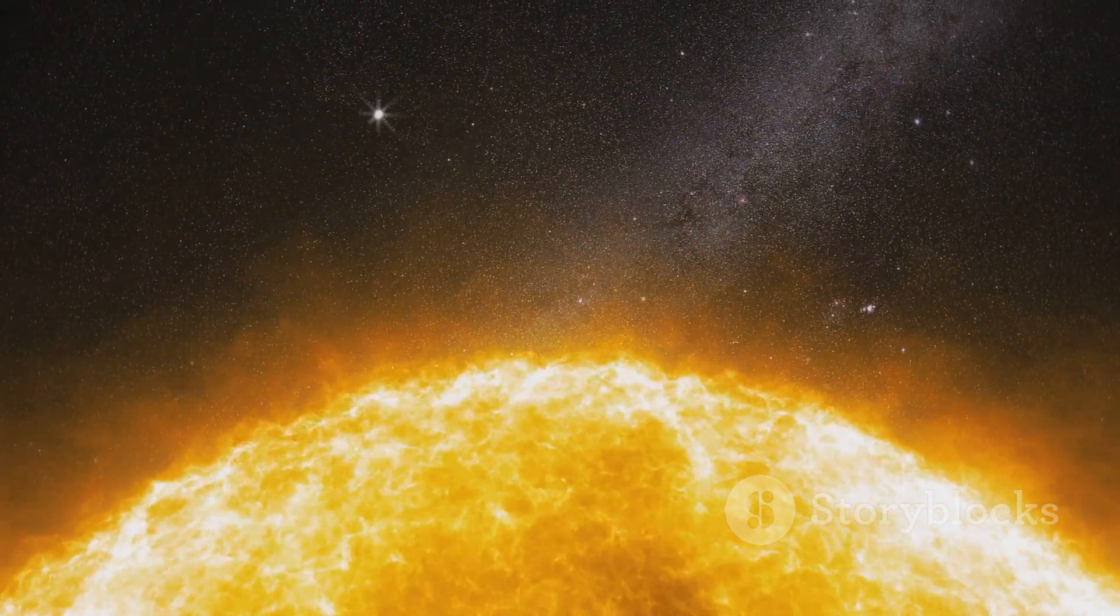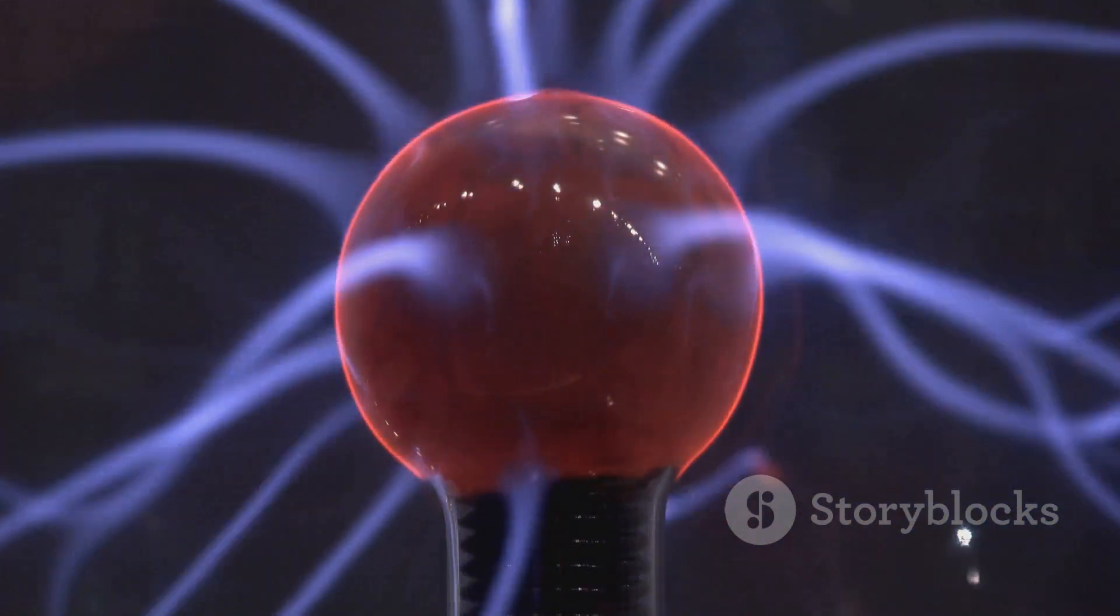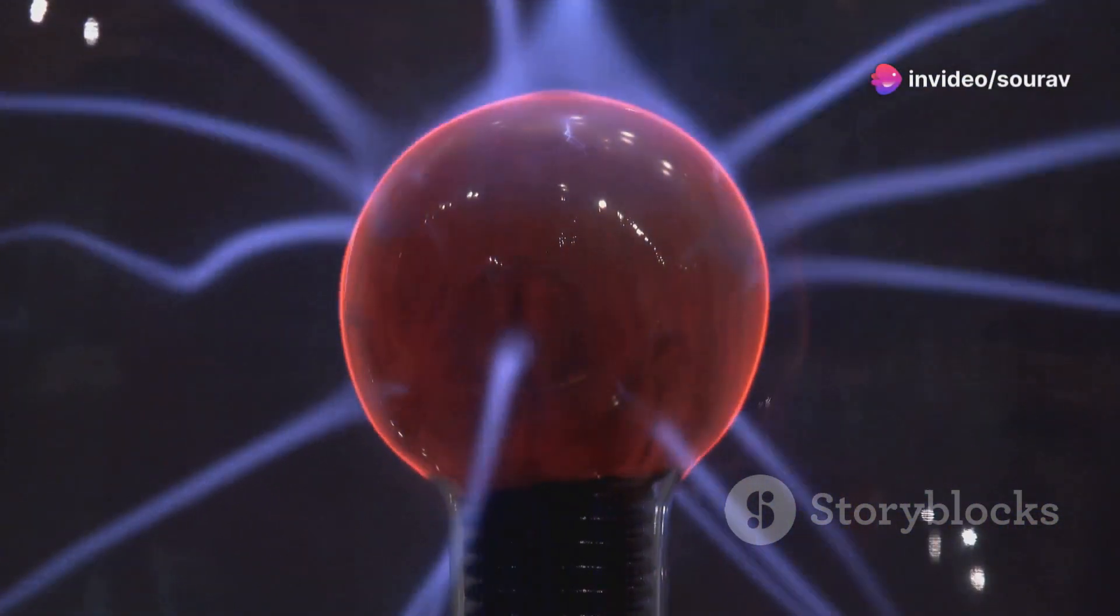Photons are everywhere. They are constantly being emitted by the sun, stars, and even our own bodies. When we see an object, it's because photons are bouncing off the object and entering our eyes.